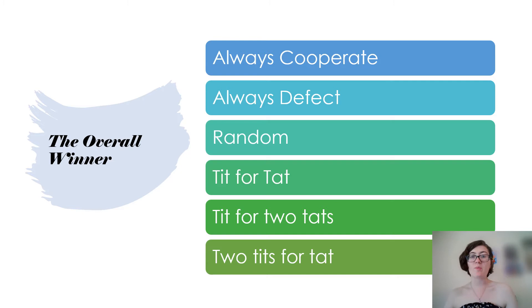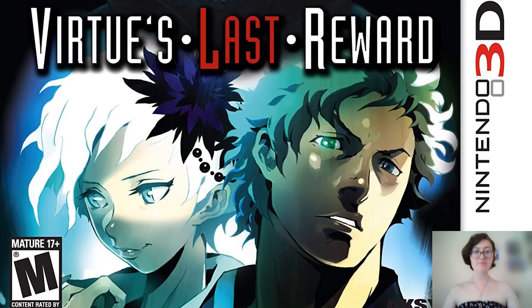Unfortunately, there really is no right way to solve the Prisoner's Dilemma, because each strategy can excel or crash based off of what the opponent chooses. Every time Axelrod thought that he found the winning strategy, it would always inevitably lose eventually, when paired against programs with randomly selected strategies.